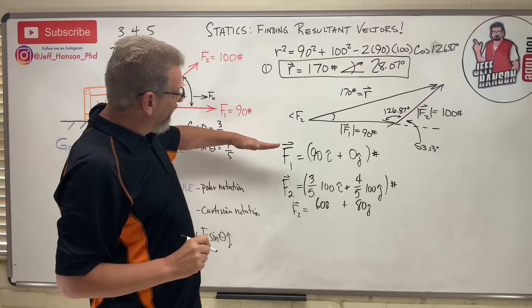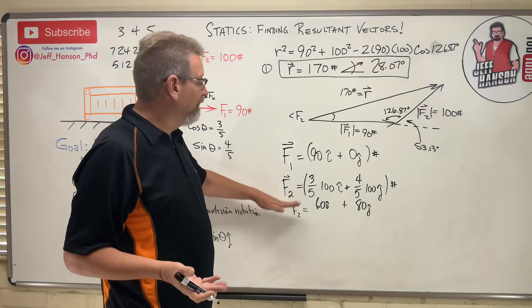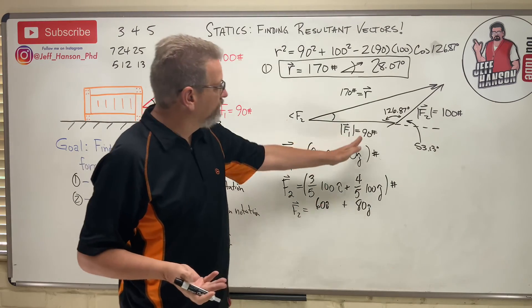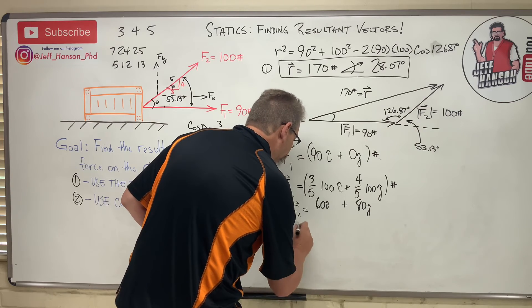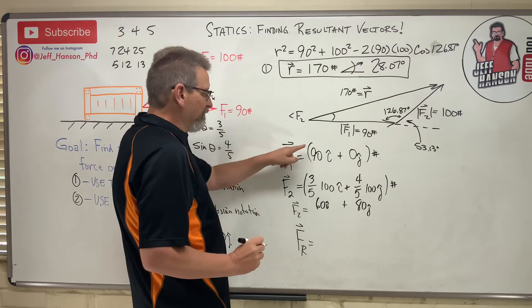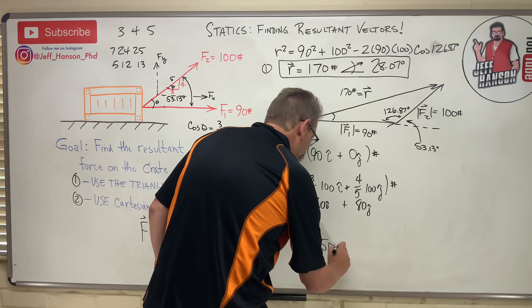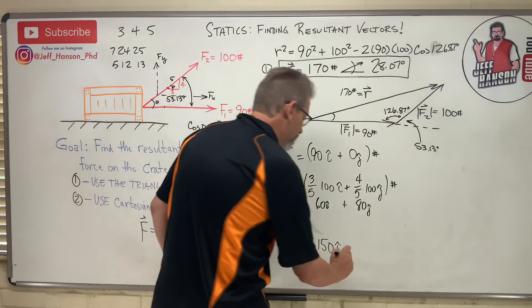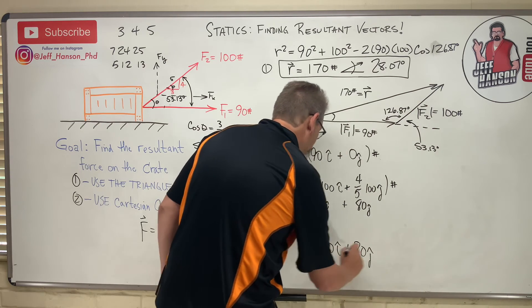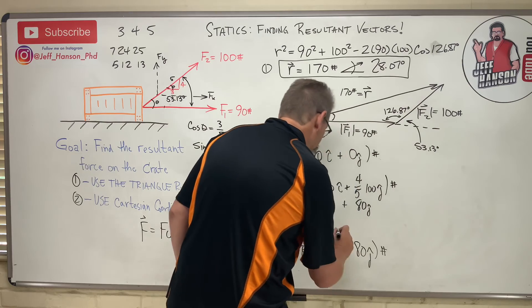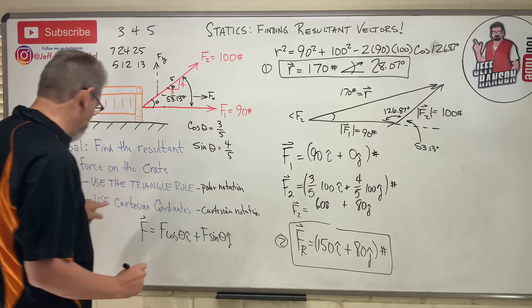Adding F1 and F2 in Cartesian form is straightforward — add the i-components together and the j-components together. FR = (90 + 60)î + (0 + 80)ĵ = 150î + 80ĵ pounds. That is the resultant in Cartesian form — answer two.